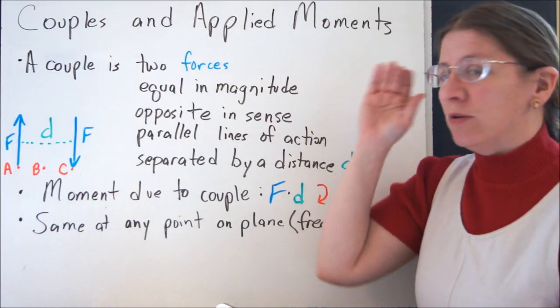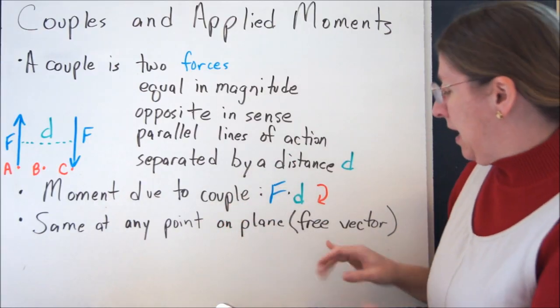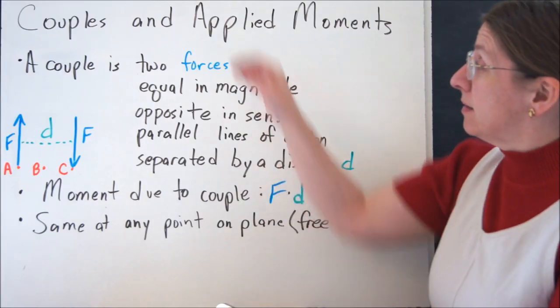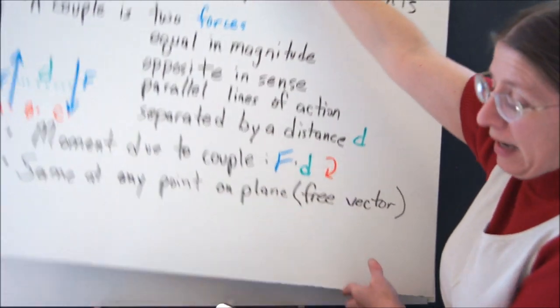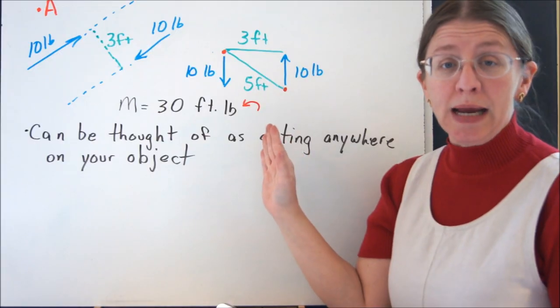So this is sort of a special example of a moment that you would have a problem like this. We call it a free vector because it doesn't matter where on the plane you actually take it. And having said that, it's a free vector no matter what direction it's going in, too, as long as it's in a plane.